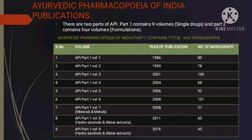Part 1 Volumes 8 and 9 are related to hydroalcoholic and water extracts. Part 1 Volume 7 and Volume 8 were published in 2011 and 2016 with 60 and 45 monographs respectively.